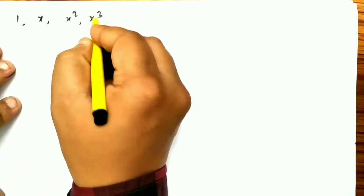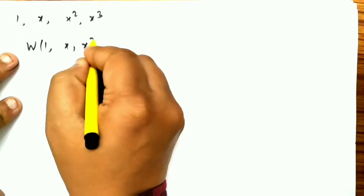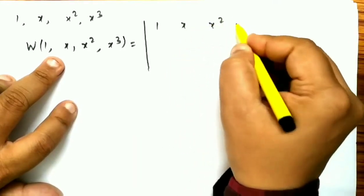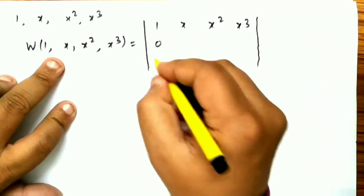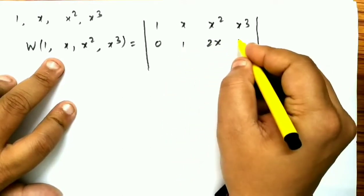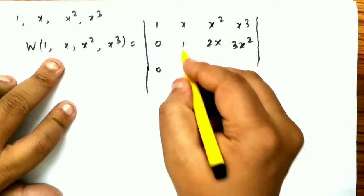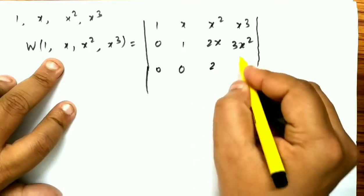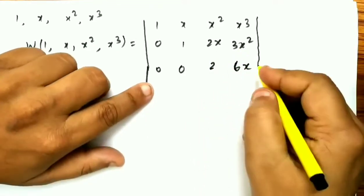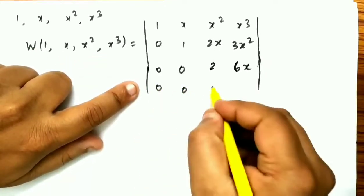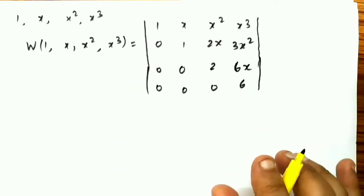Now we take 4 functions: 1, x, x², x³, and find their Wronskian. This gives a 4×4 determinant. The rows are: [1, x, x², x³], [0, 1, 2x, 3x²] (first derivatives), [0, 0, 2, 6x] (second derivatives), and [0, 0, 0, 6] (third derivatives).